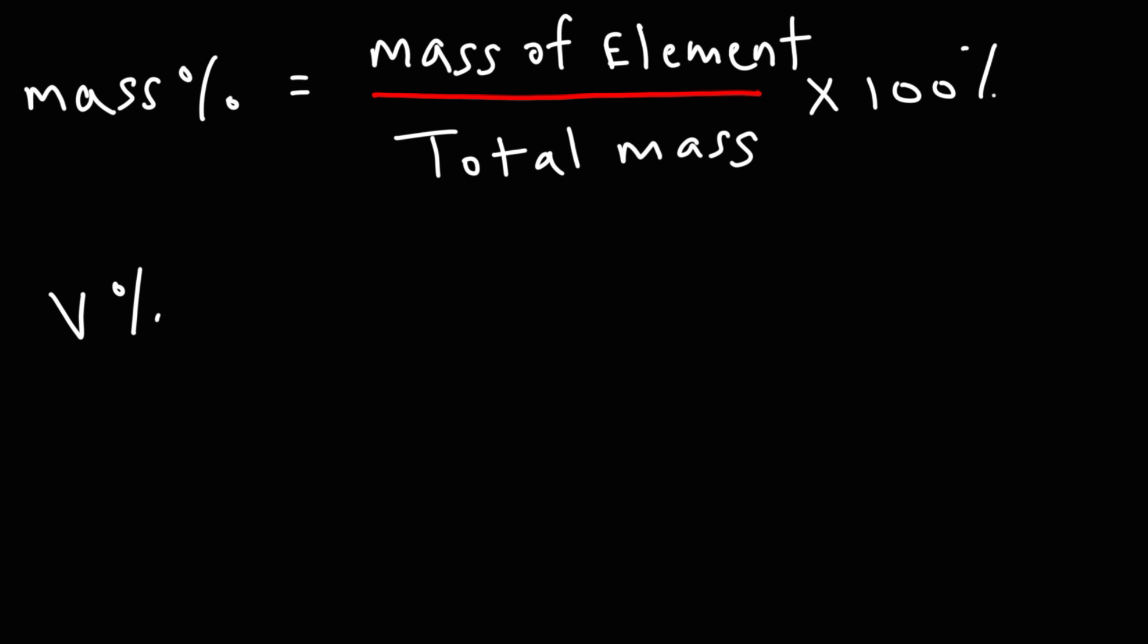It's also something known as volume percent. It's going to be the volume of the element or substance divided by the total volume times 100%. So that's how you can calculate mass percent and, if needed, volume percent. The mass percent formula is going to be very useful when dealing with problems such as empirical formula determination. You know, that's where you'll typically use it as well.